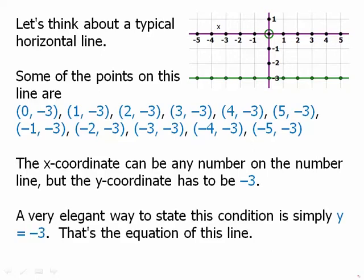Well, a very elegant way to state this condition is simply y = -3. That's the equation of the line. That sums up everything you need to know about the line. In order to qualify as a point on that line, that point has to have a y-coordinate of -3, and the x-coordinate can be whatever it wants.